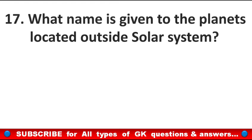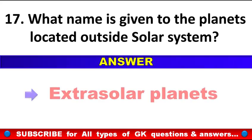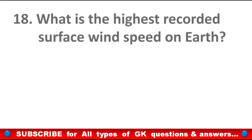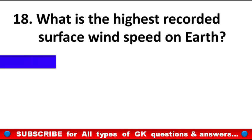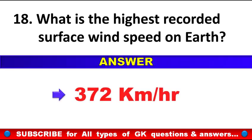What name is given to the planets located outside the solar system? Answer: Extra solar planets. What is the highest recorded surface wind speed on Earth? Answer: 372 km per hour.